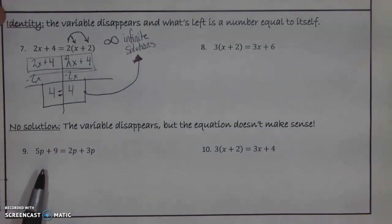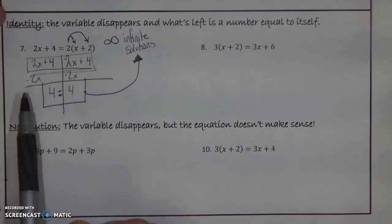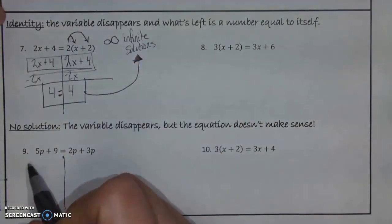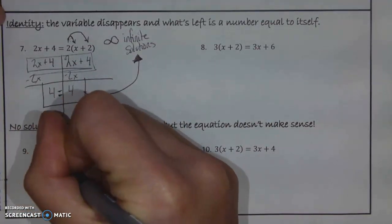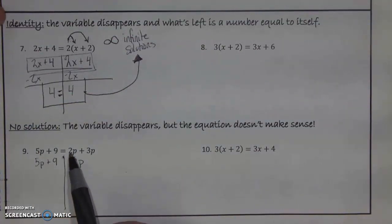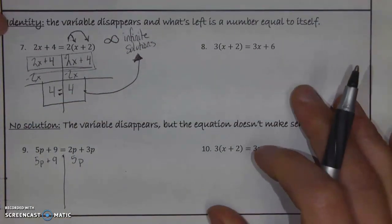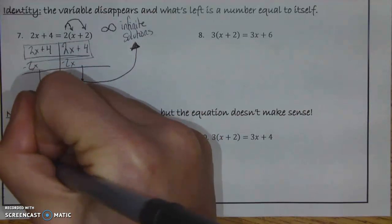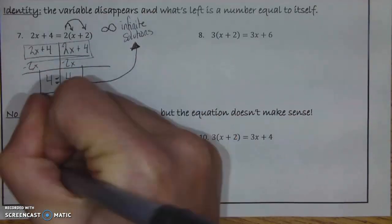Now, sometimes you're going to get into a situation that looks a lot like this. Our x is going to disappear, but we're going to have a bit of a problem because our equation won't make sense. So let's look at this one here. I have 5p + 9 is equal to 2p + 3p. When I start to solve this, I start by simplifying and combining like terms where I can, which gives me 5p + 9 is equal to 5p. Now maybe you've already noticed something wrong, but let's keep solving it as if we haven't at this point. I'm going to try to get p by itself, so let's combine my p values by subtracting 5p from both sides.